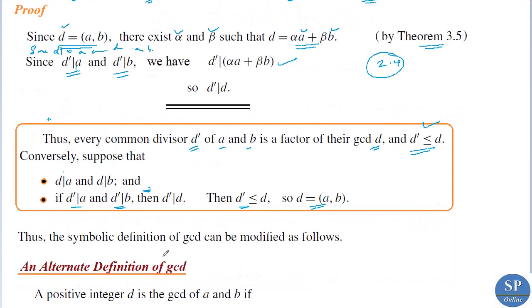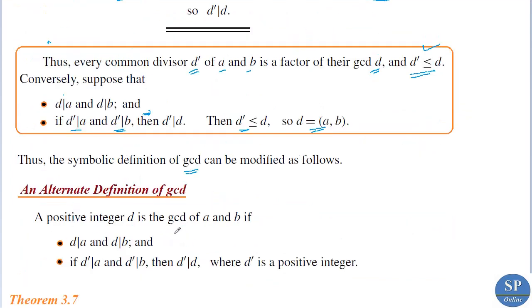Therefore we can modify the symbolic definition of GCD as follows — that is, an alternate definition of GCD: a positive integer d is the GCD of a and b if d divides a and d divides b, and the second condition is: if d-dash divides a and d-dash divides b, then d-dash divides d. This is the alternate, modified definition of GCD using the above theorem.